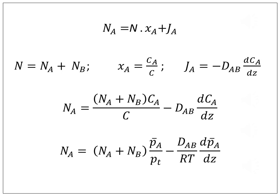This equation for gases becomes Na equals (NA plus NB) pA bar by PT minus DAB by RT into dpA bar by dZ.